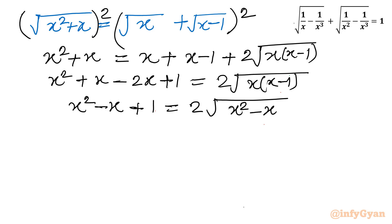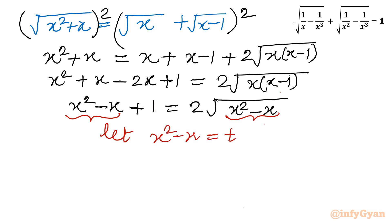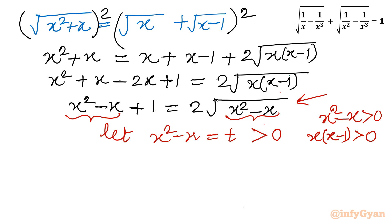Now substitution time. Let us consider this term: x² − x equals t. One important point: since there is a square root, t must always be positive. Furthermore x² − x should be positive. We have x(x − 1) > 0. On a number line with points 0 and 1: x is positive when greater than 0, and x − 1 is positive when greater than 1.